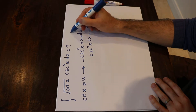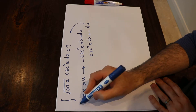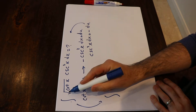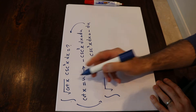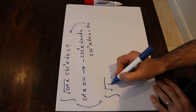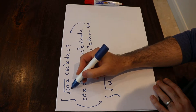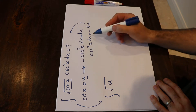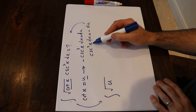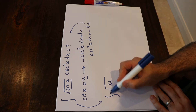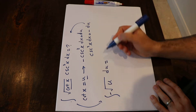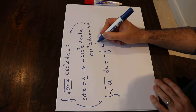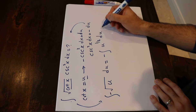Now if you substitute this into the integral and rewrite it, you will get instead of square root of cot x, I write square root of u, and instead of cosecant squared x dx, I put minus du. So this integral will be equal to minus the integral of u to the power of one half du.